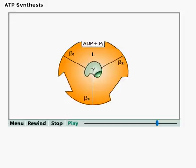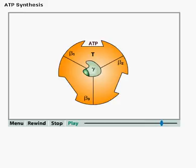The next rotation of gamma results in the T state, where ADP and inorganic phosphate are bound so tightly that they spontaneously form ATP. One more gamma rotation brings the